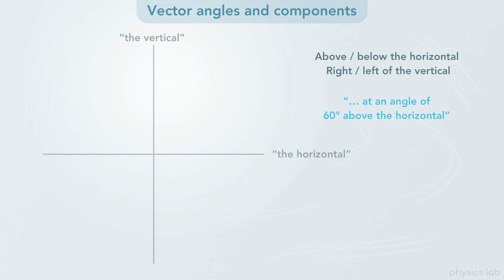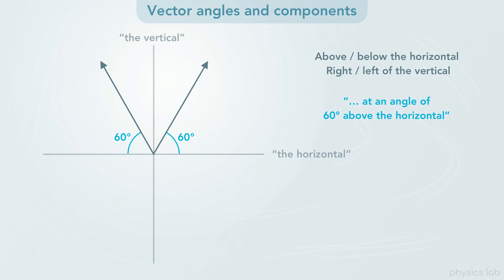If we're told that a vector is at an angle of 60 degrees above the horizontal, the vector could look like this. But the vector could also look like this, and point to the left. If the left and right directions are important to the problem, like if the left direction is negative, then 60 degrees above the horizontal is not enough information.